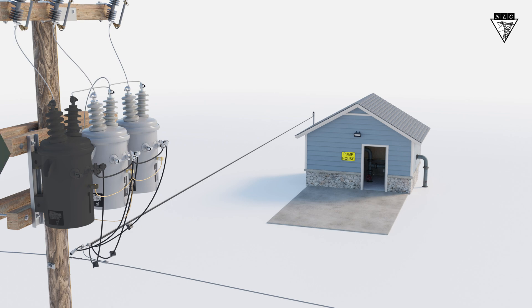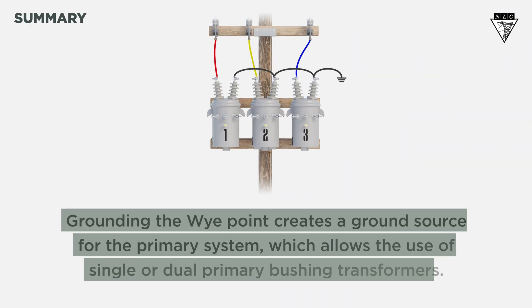So, what did we learn? Grounding the Y point creates a ground source for the primary system, which allows the use of single or dual primary bushing transformers.